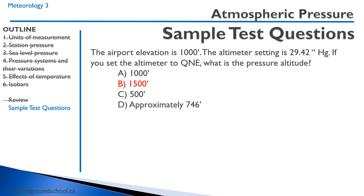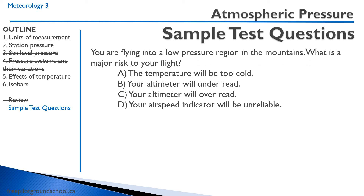Second question: you are flying into a low-pressure region in the mountains — what is a major risk to your flight? Option A: the temperature will be too cold — it might be cold, but that's not really a major risk. Option B: your altimeter will under-read. Option C: your altimeter will over-read. Option D: your airspeed indicator will be unreliable — no. So A and D are out, leaving B and C. Remembering the mnemonic — from high to low, look out below — your altimeter would over-read. You'd think you're at 8,000 feet when you might actually be at 6,000 feet. The correct answer is C.